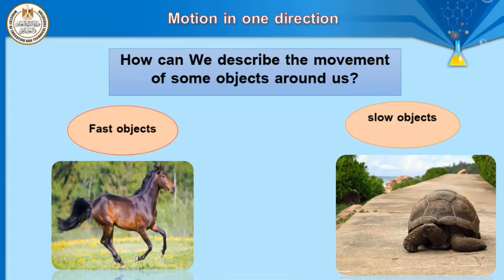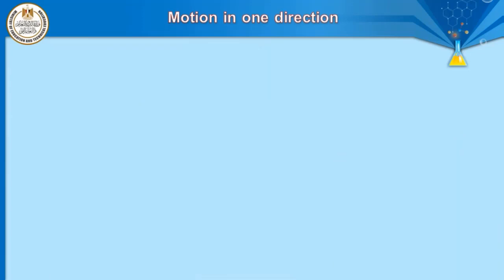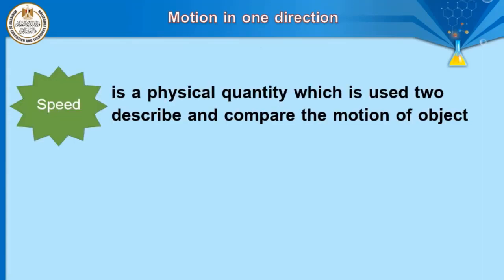The motion in the first picture can be described as fast motion, while the motion in the second picture can be described as slow motion. Why? Due to two factors: distance and time. Distance and time are the two factors used to describe motion as fast or slow.